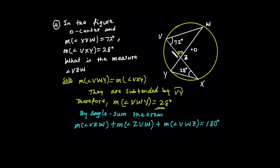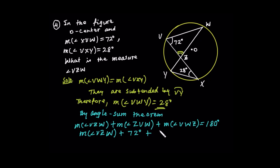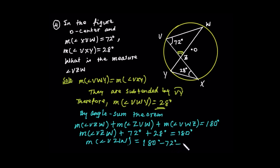By the angle sum theorem: the measure of angle VZW plus the measure of angle VWZ plus the measure of angle ZVW equals 180 degrees. Substituting: the measure of angle VZW plus 28 degrees plus the measure of angle VWZ equals 180 degrees. Therefore, the measure of angle VZW is equal to 180 degrees minus 28 degrees minus the remaining angle, which gives the result.